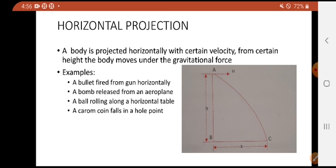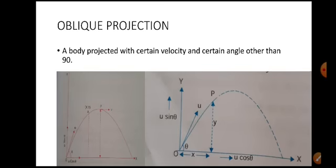Horizontal projection is when a body is projected with a certain initial velocity from a certain height at zero degrees, or parallel to the surface or ground. The next projection in our syllabus is oblique projection, which we will discuss extensively in this chapter.